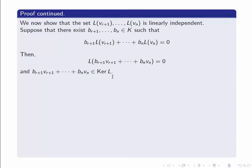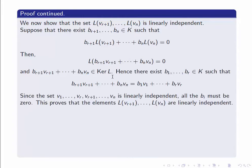But we have a basis for the kernel: V1 up to Vr. So this element, being in the kernel, is expressible as a linear combination of V1 up to Vr. There exist some elements B1 up to Br in K such that Br+1·Vr+1 + ... + BN·VN = B1·V1 + ... + Br·Vr. This is a linear dependence relationship between V1 up to Vn.